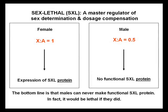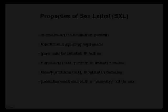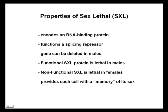An X:A ratio of 1 results in expression of functional SXL. An X:A ratio of 0.5 results in no functional SXL. The bottom line is that males can never make functional SXL. In fact, if they did, it would be lethal. SXL encodes an RNA binding protein and functions as a splicing repressor. The gene can be deleted in males. Functional SXL is lethal in males; non-functional SXL is lethal in females.